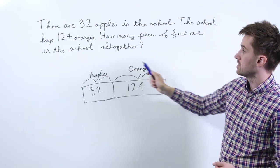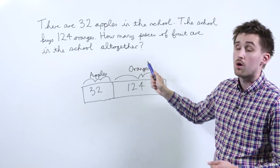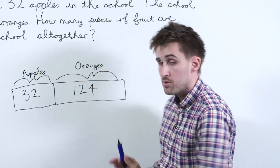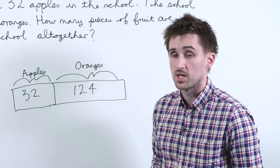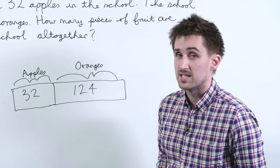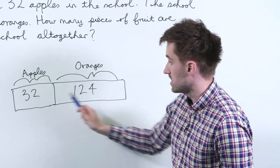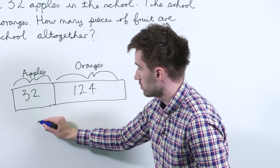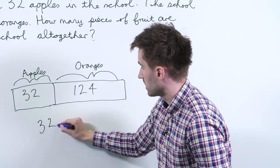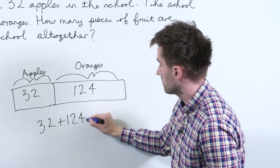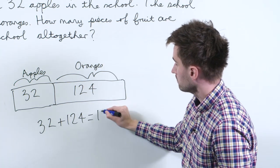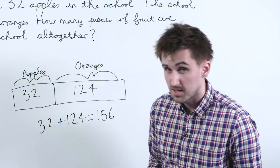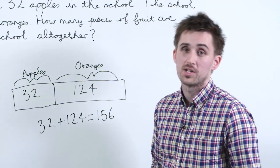many pieces of fruit in the school there are altogether. Referring back to the bar model, pupils should be able to work out that we need to add both these sections together, and we can do this using a variety of different methods — they can use the formal method, a number line, or mental methods depending on their confidence level.